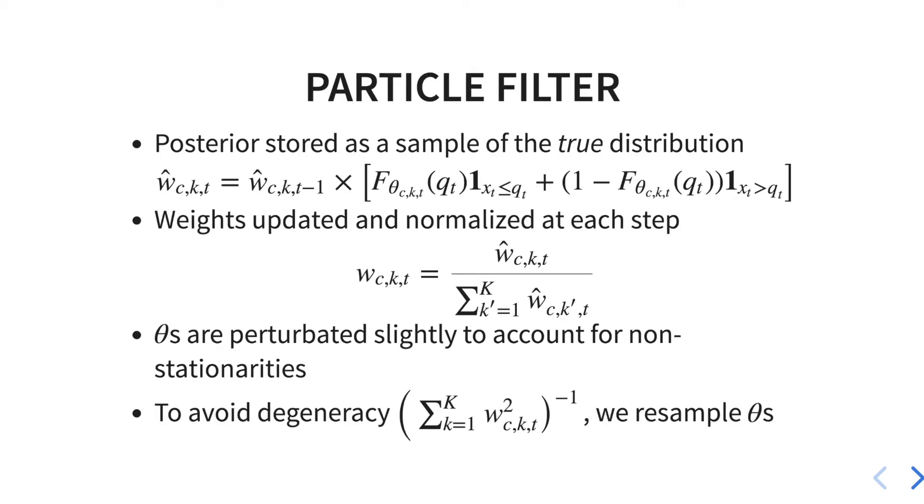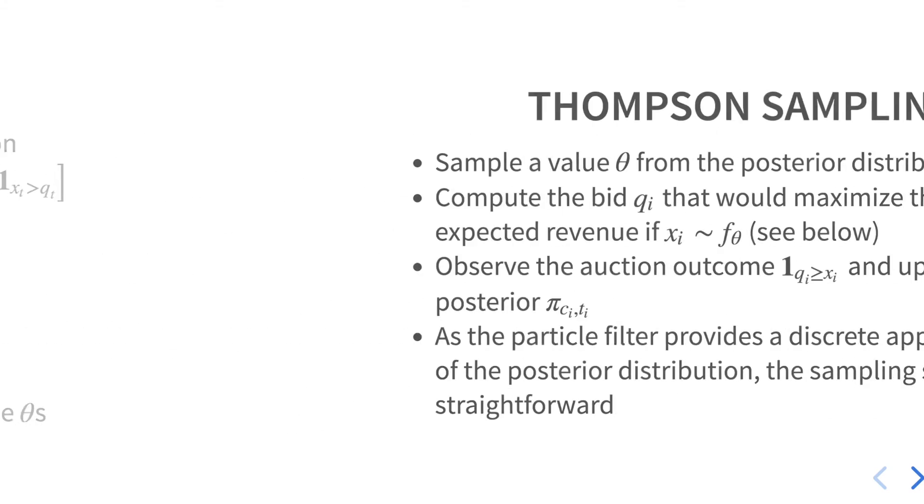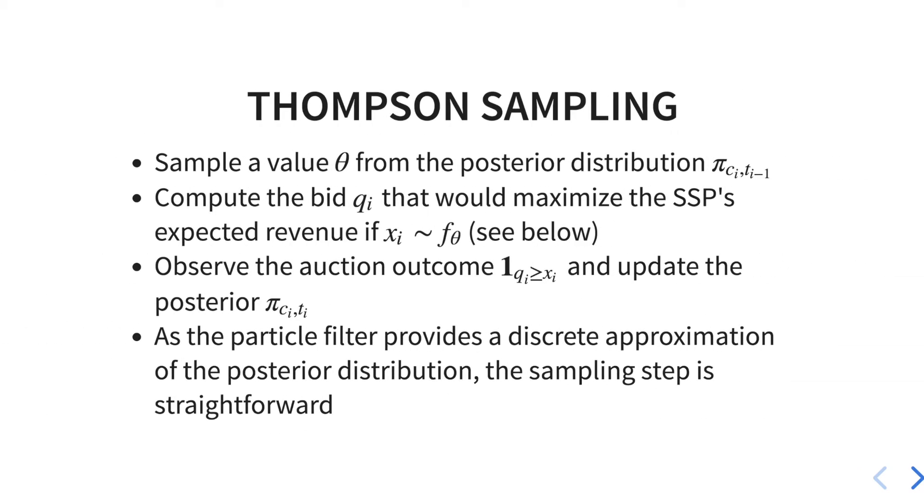To update the Bayesian knowledge we have about the other SSPs, we use a sequential Monte Carlo method called particle filter. We combine this approach with Thompson sampling to decide which arm to choose.